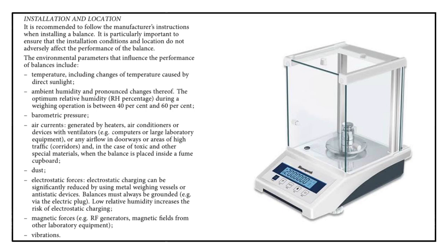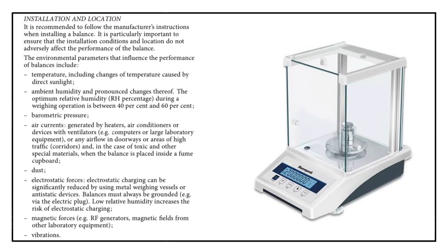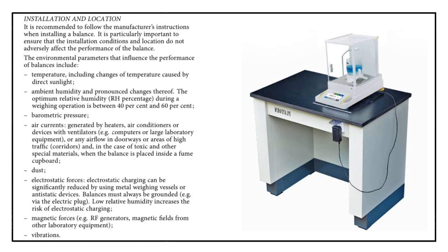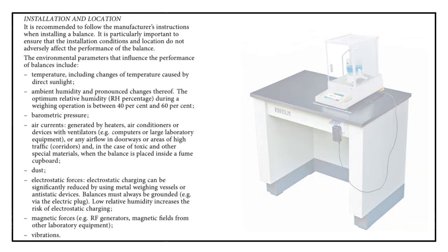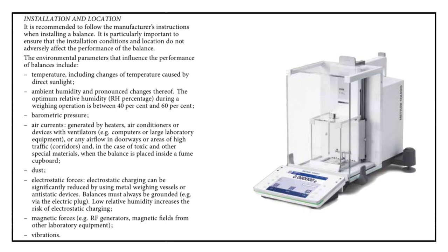Regarding installation and location, it is always recommended to follow the manufacturer's instructions when installing a new balance. The surrounding conditions and location must not affect balance performance. Environmental conditions that generally affect balance performance include temperature, humidity, barometric pressure, air currents, dust, electrostatic force, magnetic force, and vibrations.